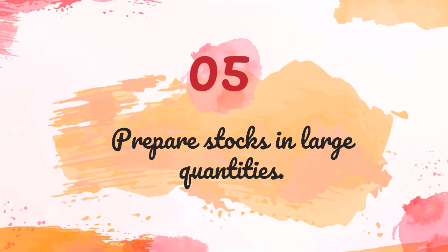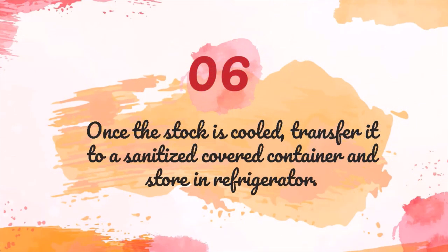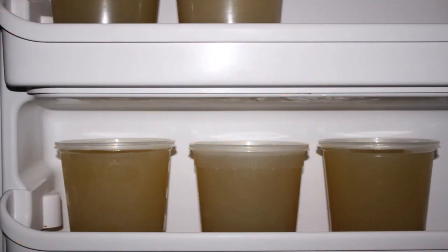Number 5, most stocks are prepared in large quantities, cooled and held for later use. Great care must be taken when cooling a stock to prevent foodborne illnesses or souring. Number 6, once the stock is cooled, transfer it to a sanitized covered container and store it in the refrigerator. As the stock chills, fat rises to its surface and solidifies. If left intact, this layer of fat helps preserve the stock.